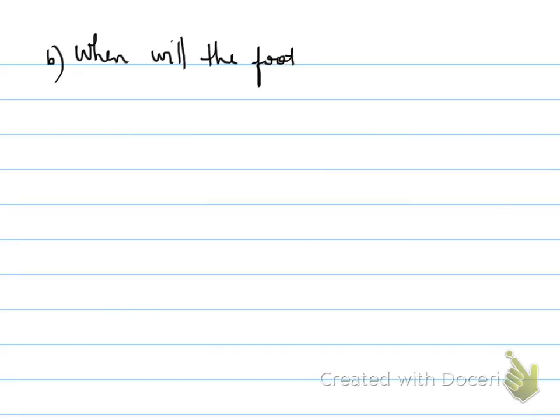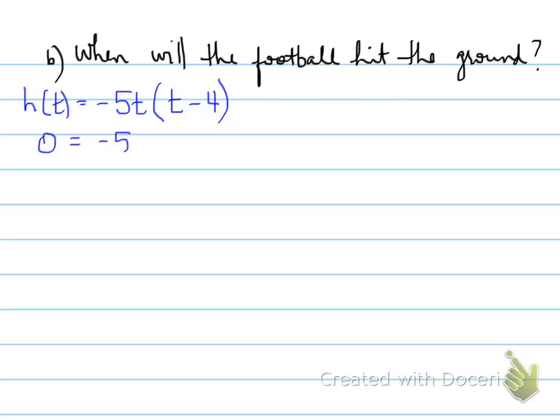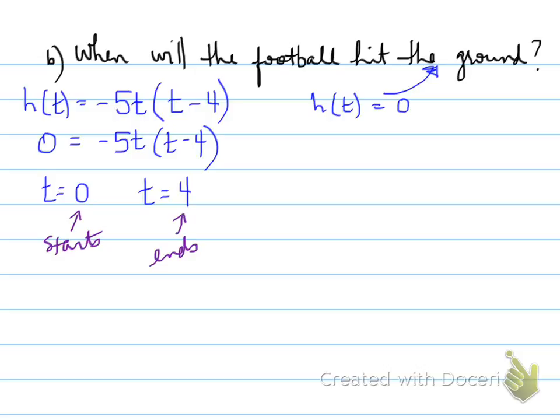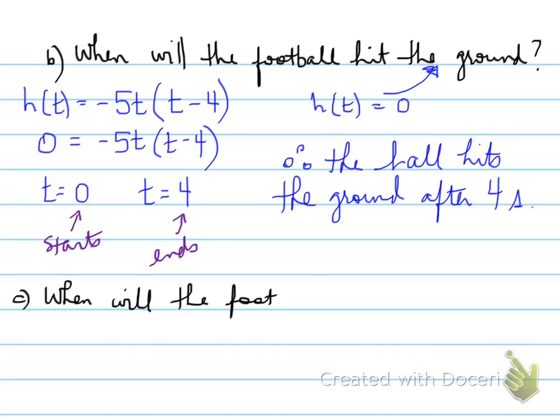Part B asks you to find when will the football hit the ground. We have our equation, which is already in factored form because we did that in part A. We can find the zeros. Why do we need the zeros? Well, when something hits the ground, it means the height is zero. So we find out that t equals zero from here, and t equals four from here. Zero seconds means the ball hasn't even left the ground yet, folks. So it starts at zero seconds, and then it ends at four seconds. Therefore, the football hits the ground at four seconds.